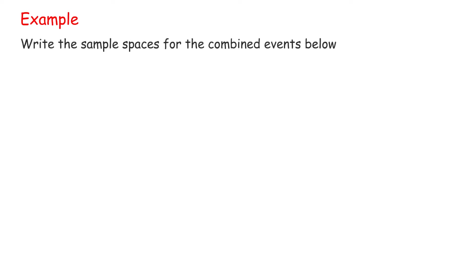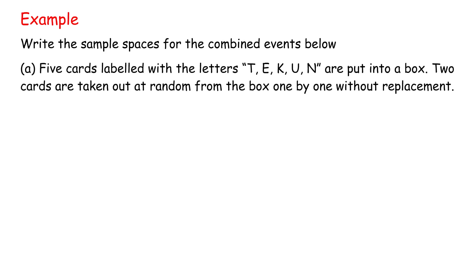Example: Write the sample spaces for the combined events below. A. Five cards labeled with the letters T, E, K, U, N are put into a box. Two cards are taken out at random from the box one by one without replacement.